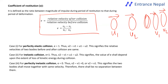Based on the coefficient of restitution: if e = 1, the collision is perfectly elastic. If e is less than 1, the collision is inelastic. If e = 0, it is a perfectly inelastic collision.